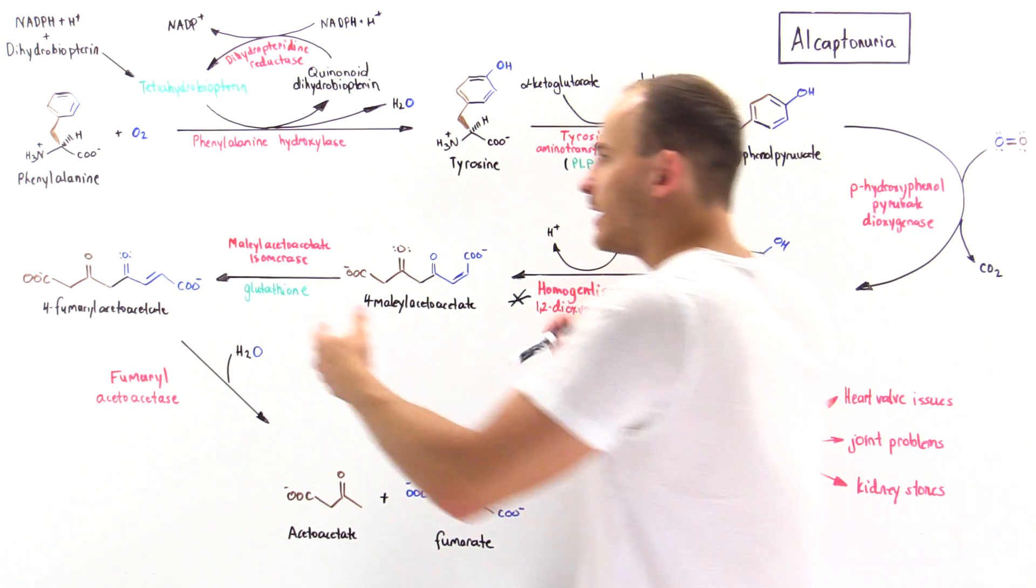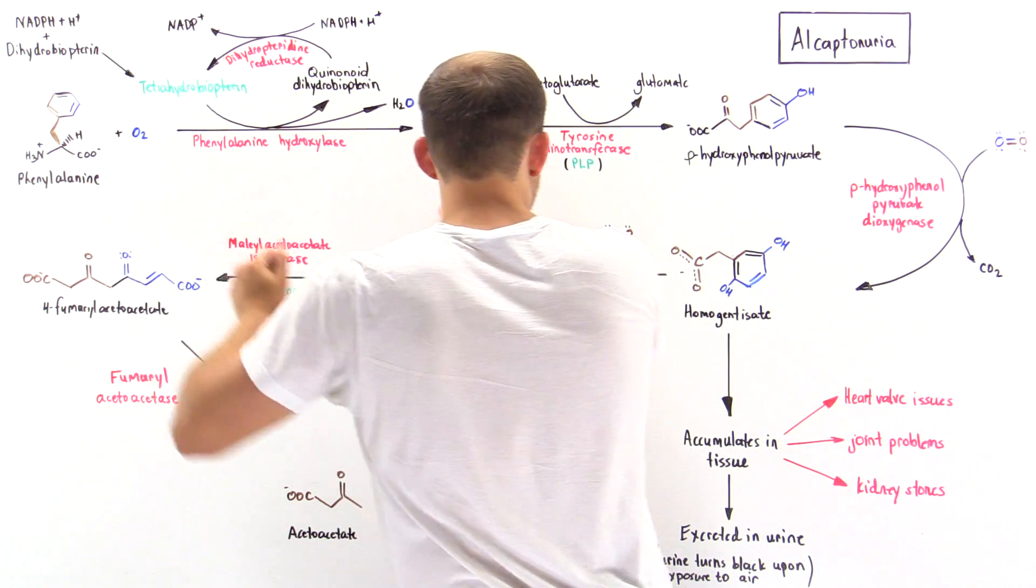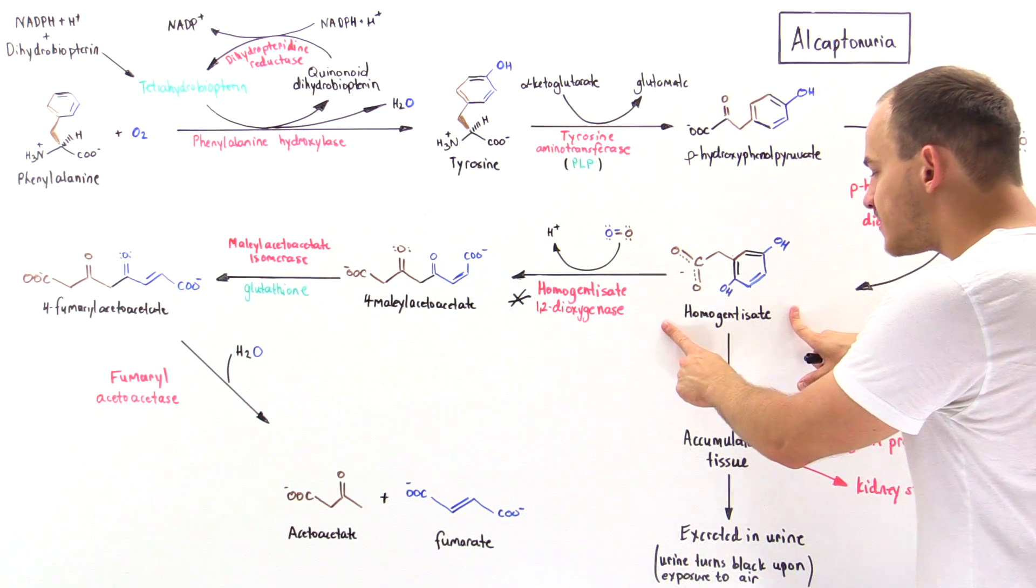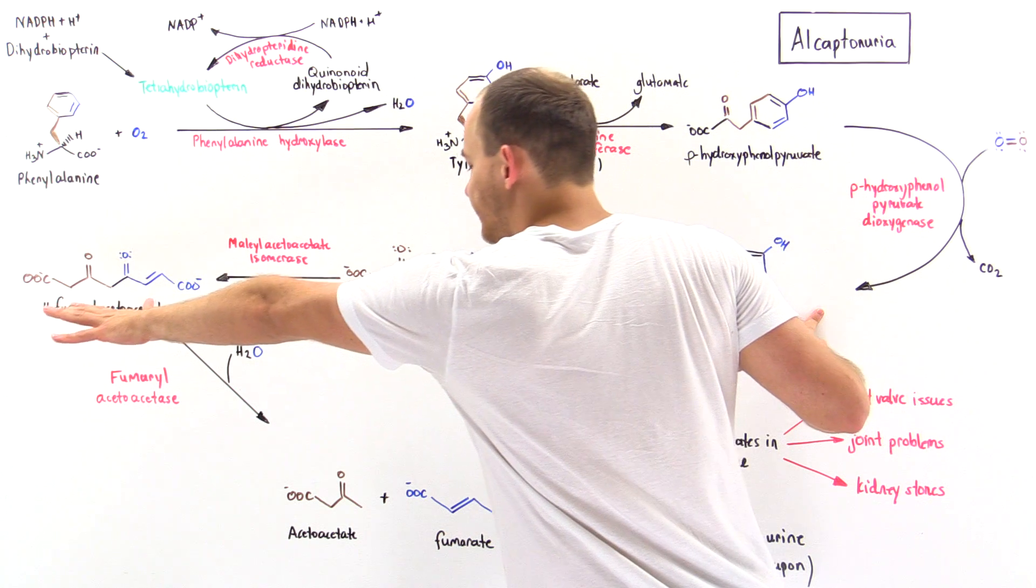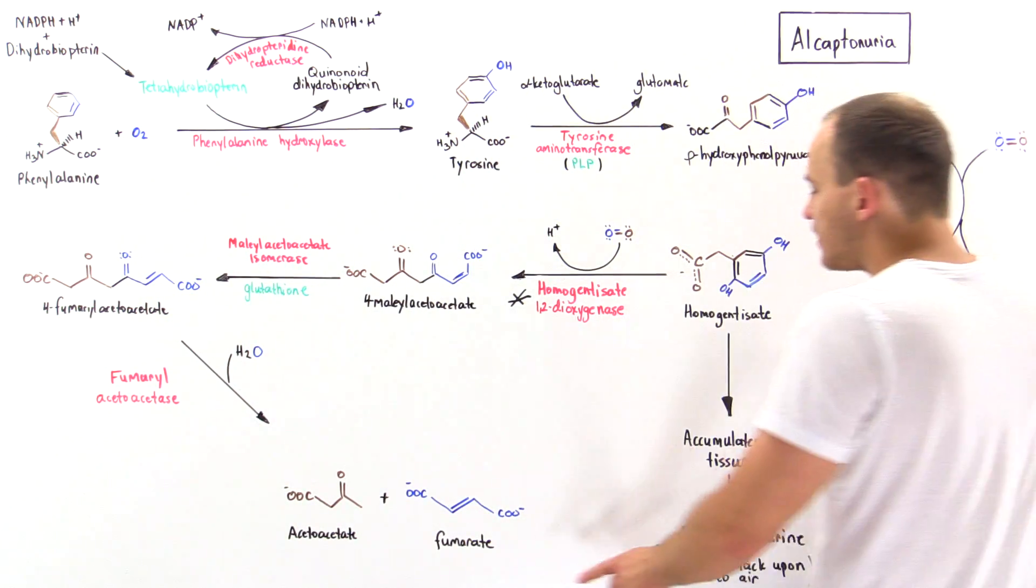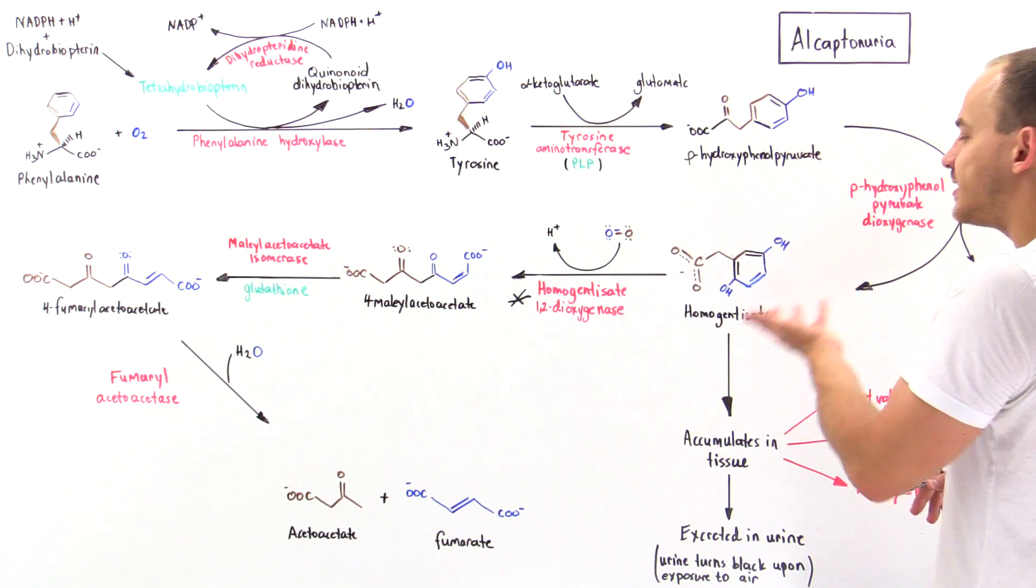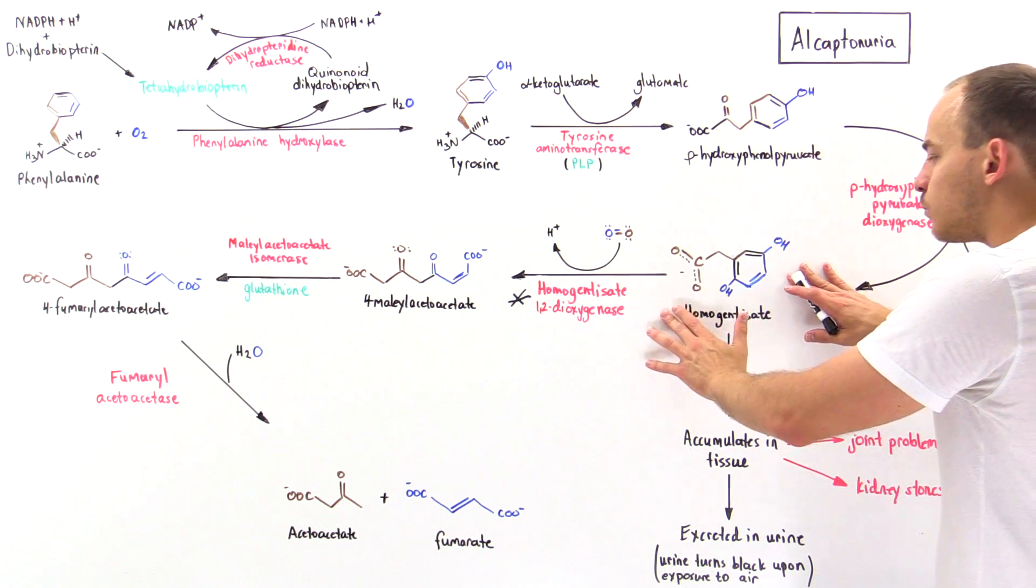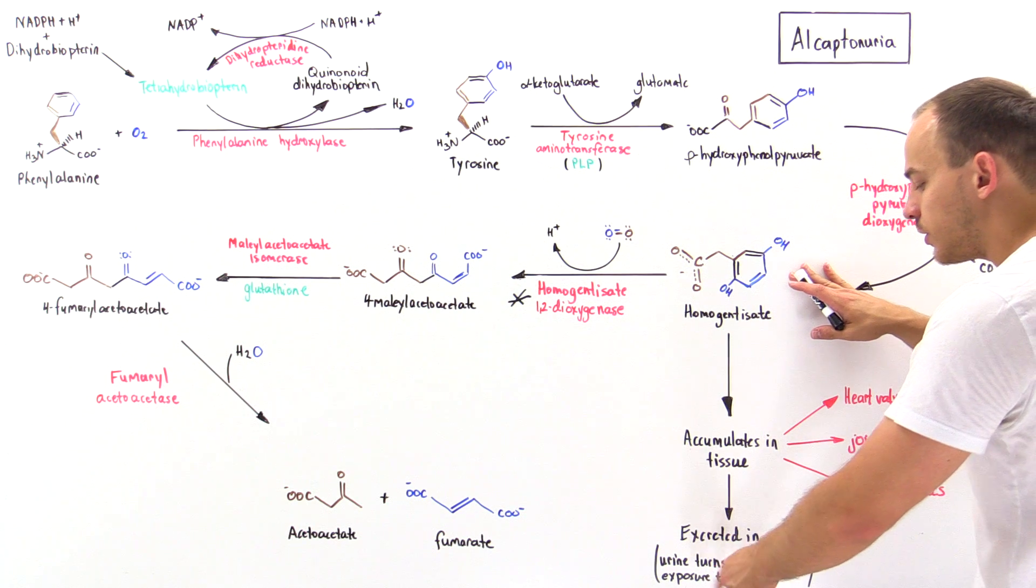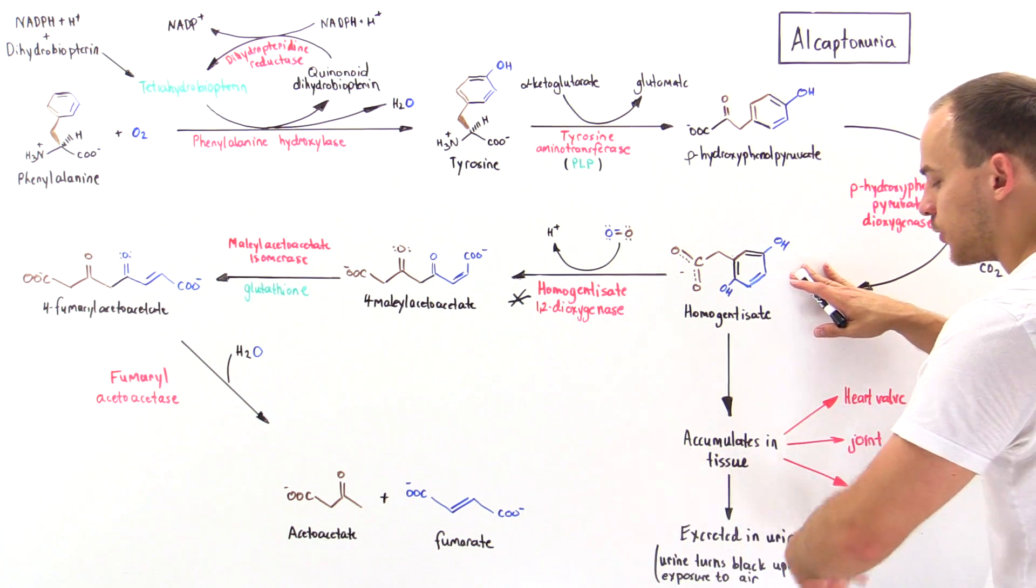We can break down these two amino acids into homogentisate, but then homogentisate will not be able to be broken down into these two intermediates here. So we're going to accumulate this molecule within our body that will begin to appear in our urine causing a color change of the urine to black.